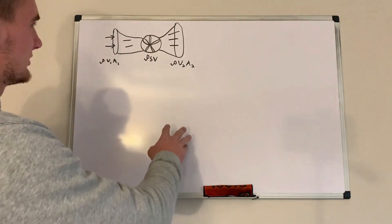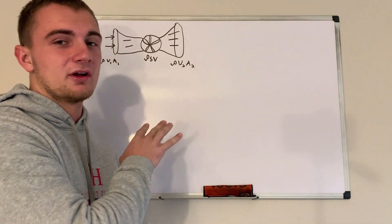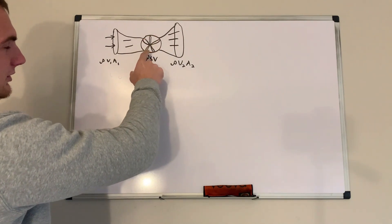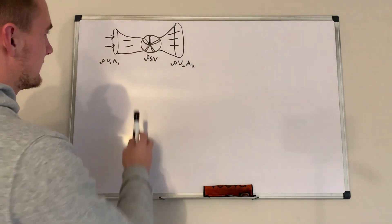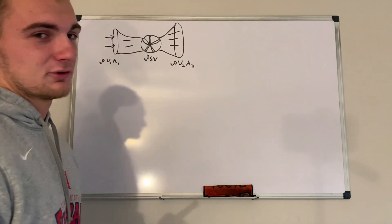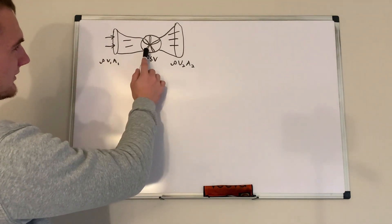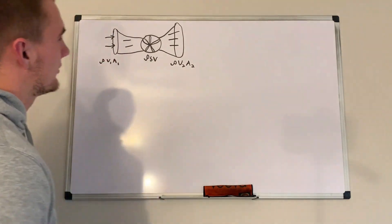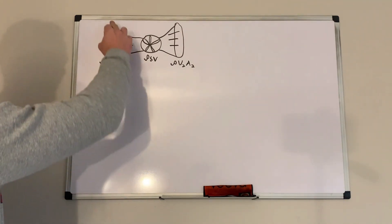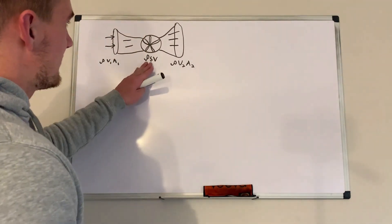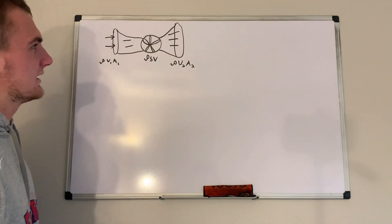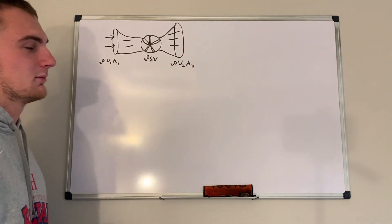What I've drawn out here is a turbine with the actual blades in the middle. We're going to start with a momentum balance. On the left, this is our turbine, and we're going to say that air is our fluid. Air goes into our turbine from the left and out to the right. We have a mass flow rate going in: density times v1 times some inlet area.